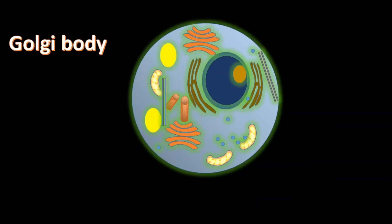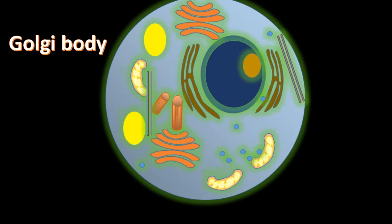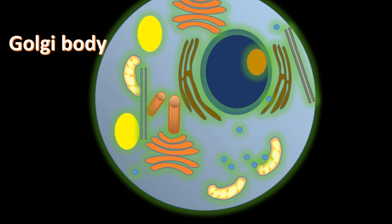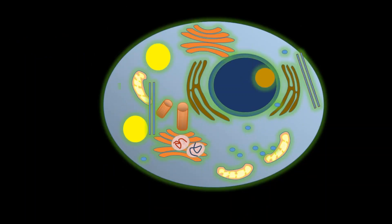Next organelle is Golgi body. The work of Golgi body is to collect the proteins synthesized by endoplasmic reticulum, sort them, modify them, and send them to their targeted places. In other words, it works like a post office for the cell.